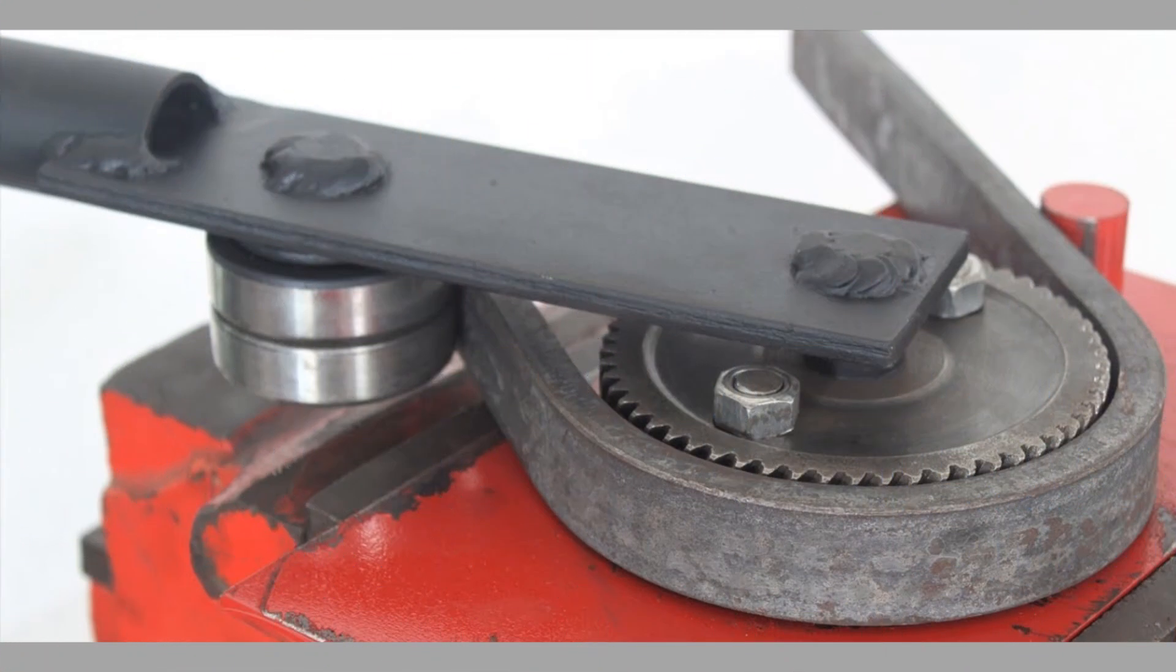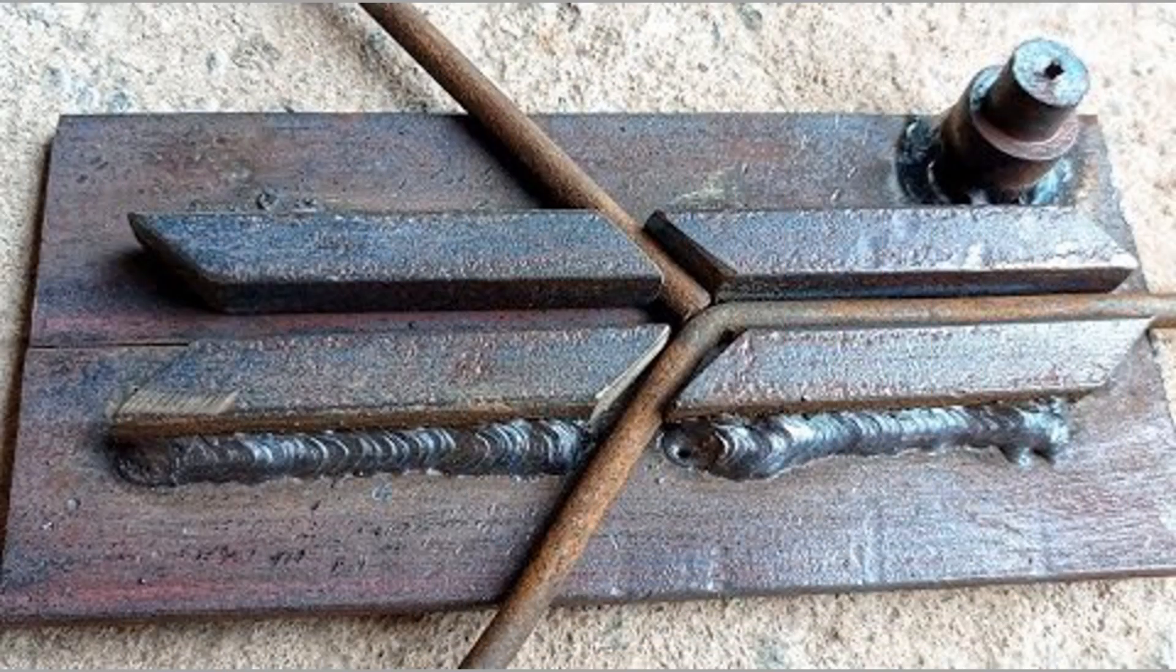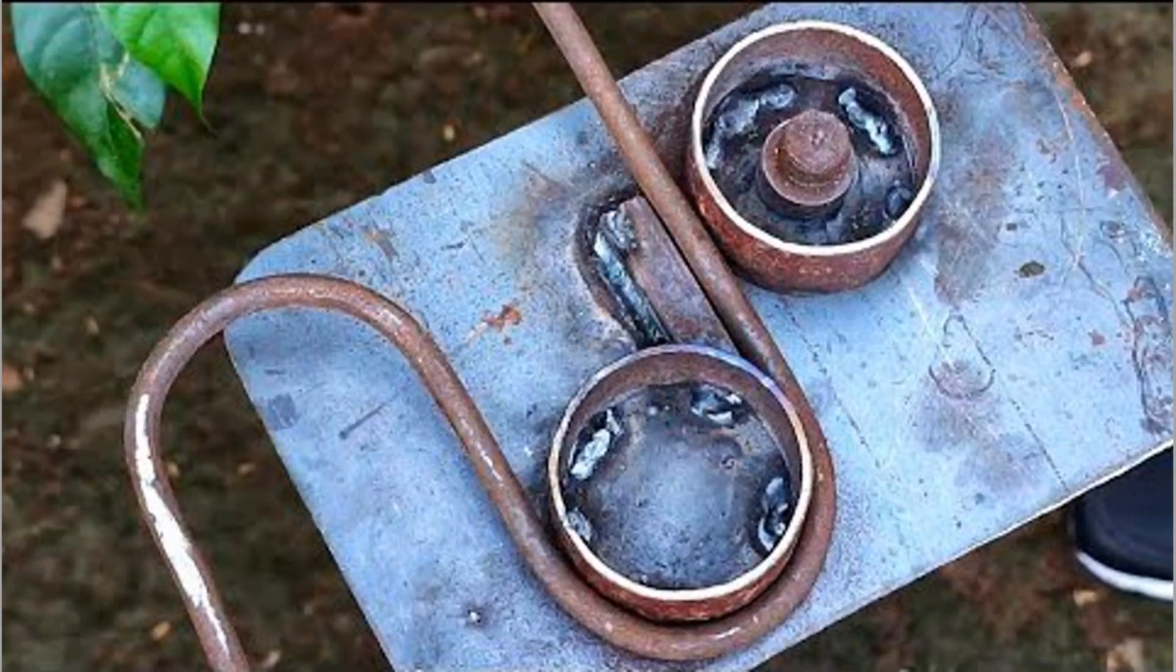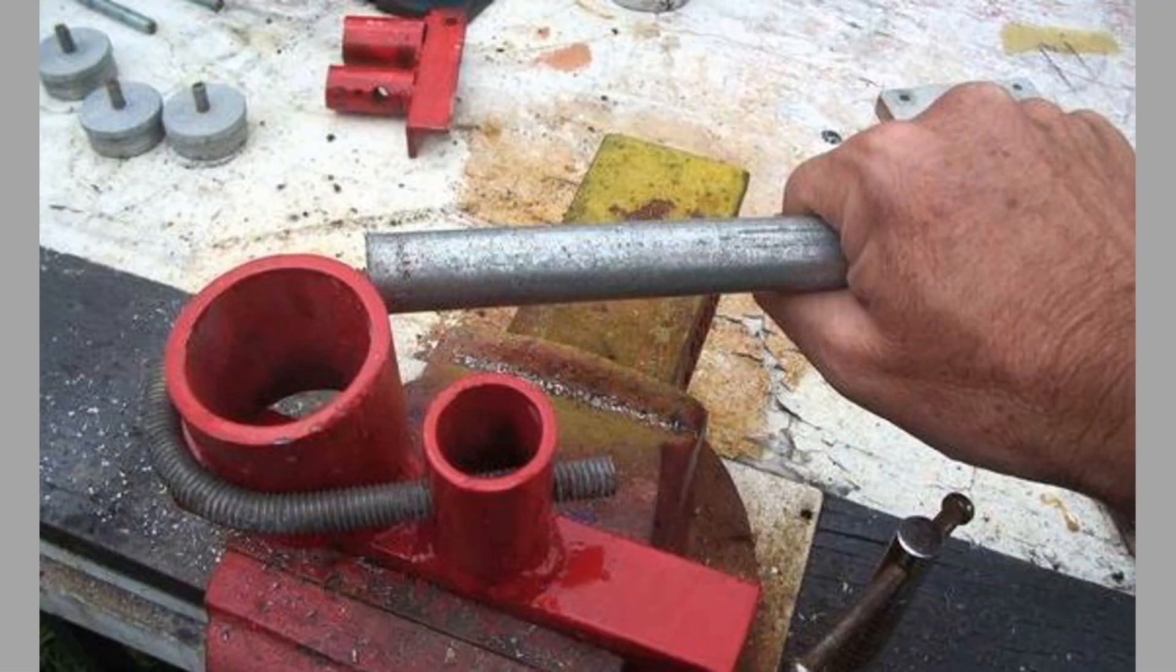Commonly used equipment includes box and pan brakes, brake presses and other specialized machine presses in industrial applications, and handmade hydraulically actuated or manually operated presses in home use.